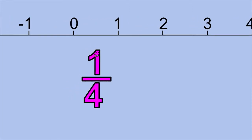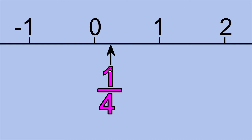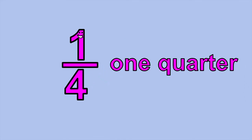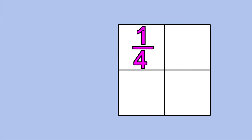You can find me on the number line between 0 and 1. If you divide the line segment between 0 and 1 into 4 equal sized parts, I'm at the end of the first part. That's why they call me 1 quarter. Because if you divide anything into 4 equal sized parts, I represent just one of those parts.